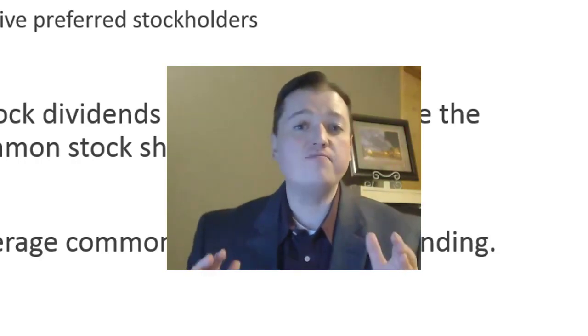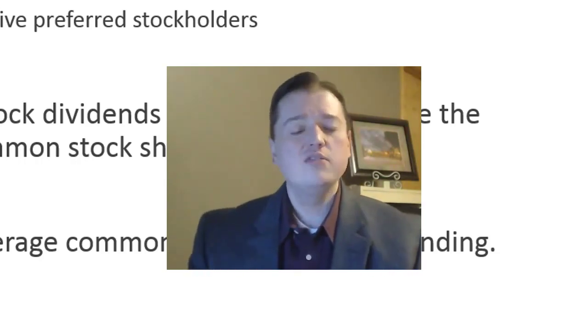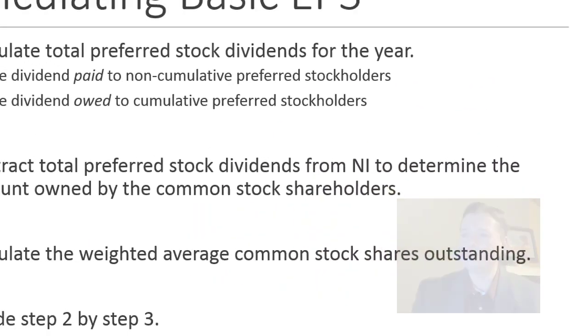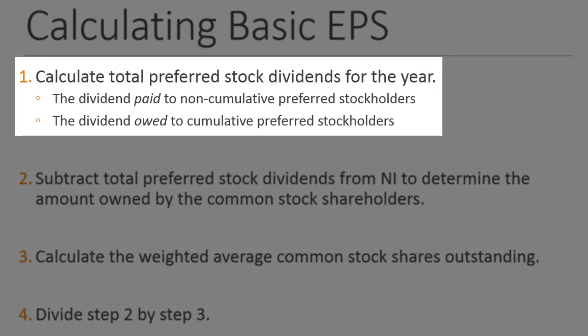We're going to start by doing an example of basic earnings per share without the simplification. Step one: calculating our total preferred stock dividends for the year. Remember, preferred stockholders have no ownership or control of our company — all they get is the right to their dividend first, and if we liquidate they get their portion before common shareholders. Since they can't vote, they're not considered true owners.